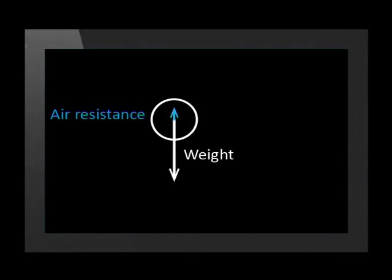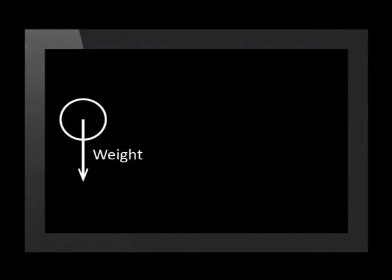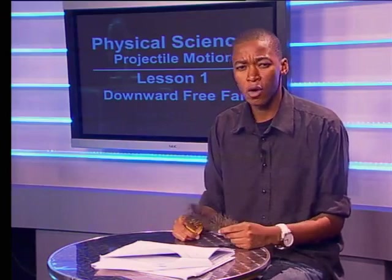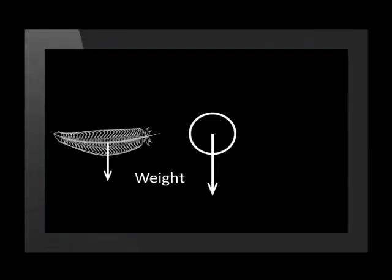Air resistance also pushed the ball in the opposite direction to its motion, but the ball has a more compact shape and greater mass than the feather, so the air resistance on the ball was negligible — we can ignore it. The only significant vertical force on the ball is its weight, so the ball was in free fall. Now imagine both the ball and the feather in a place with little or no air resistance — both would fall freely, each with weight as the only significant vertical force.